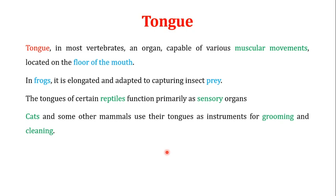The first thing we are going to discuss is the tongue. In most vertebrates, the tongue is actually an organ capable of various muscular movements. The tongue is located on the floor of the mouth, meaning it is made of different kinds of muscles, which are responsible for the movement of the tongue. This movement is helpful in many physiological functions. For example, in frogs, the tongue is elongated and adapted for capturing insect prey.